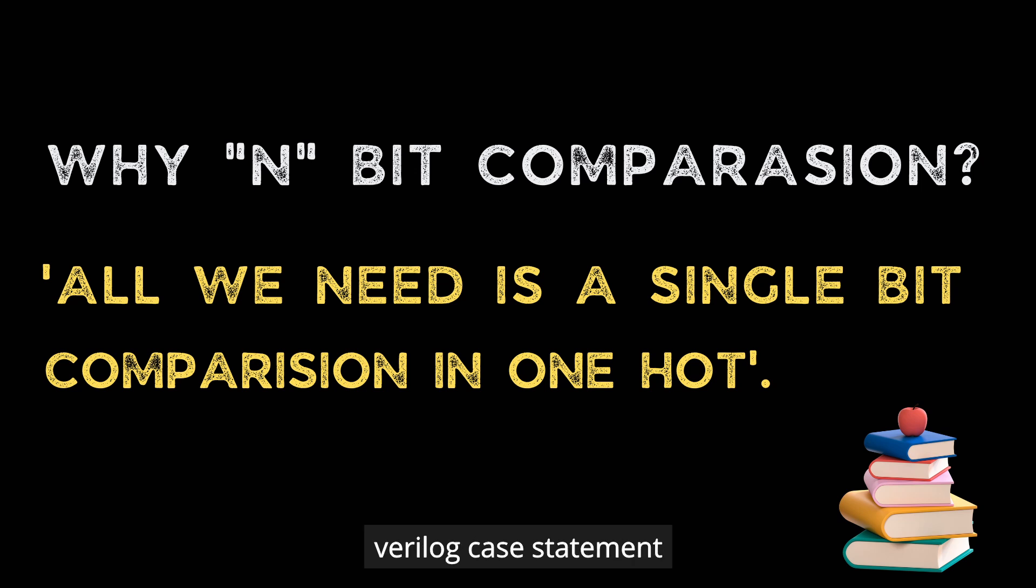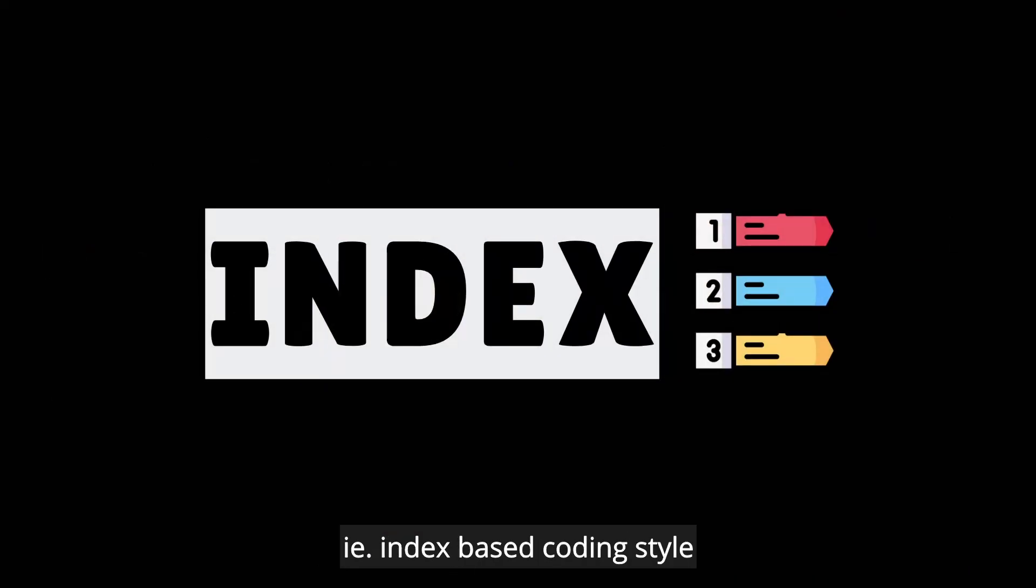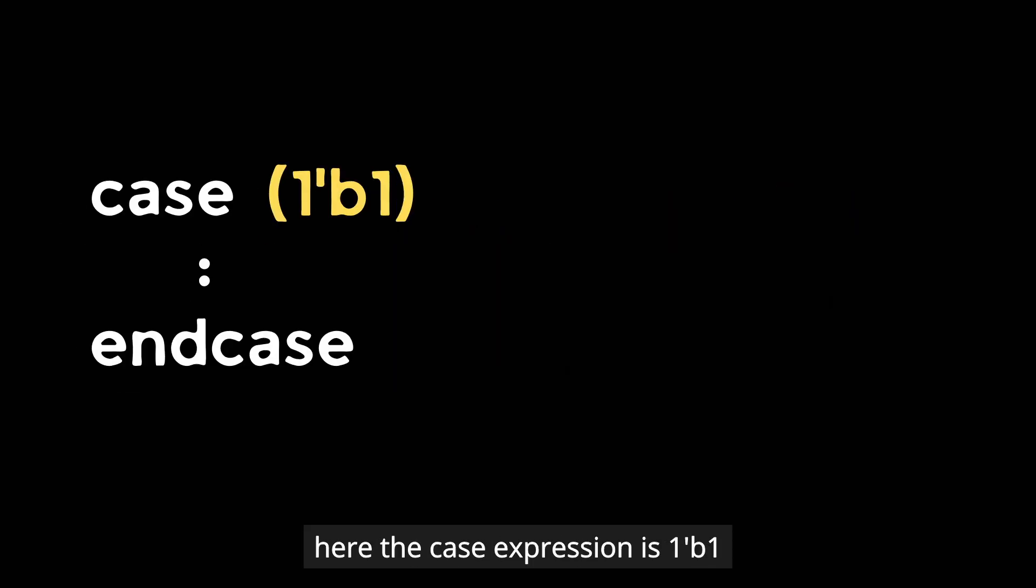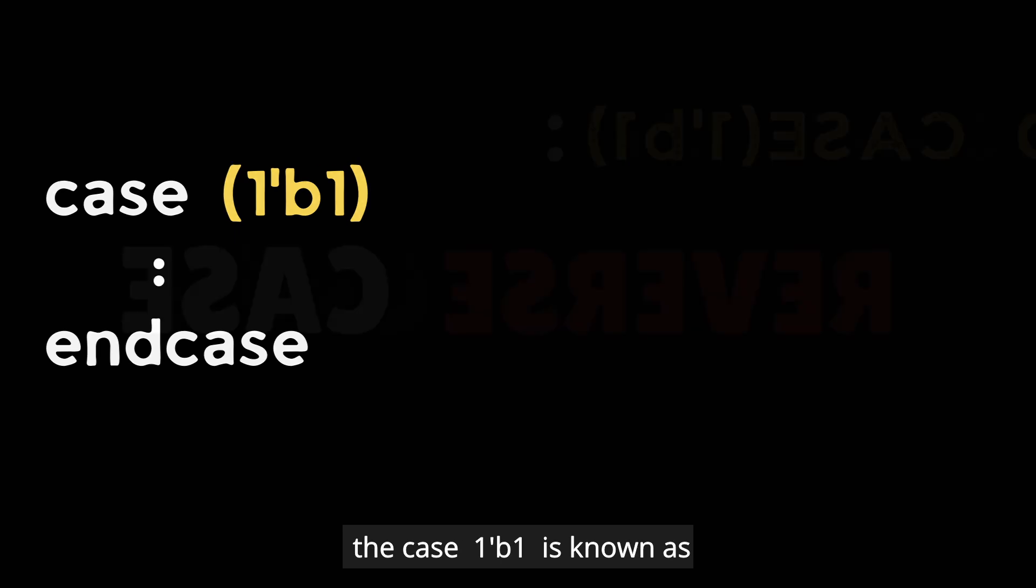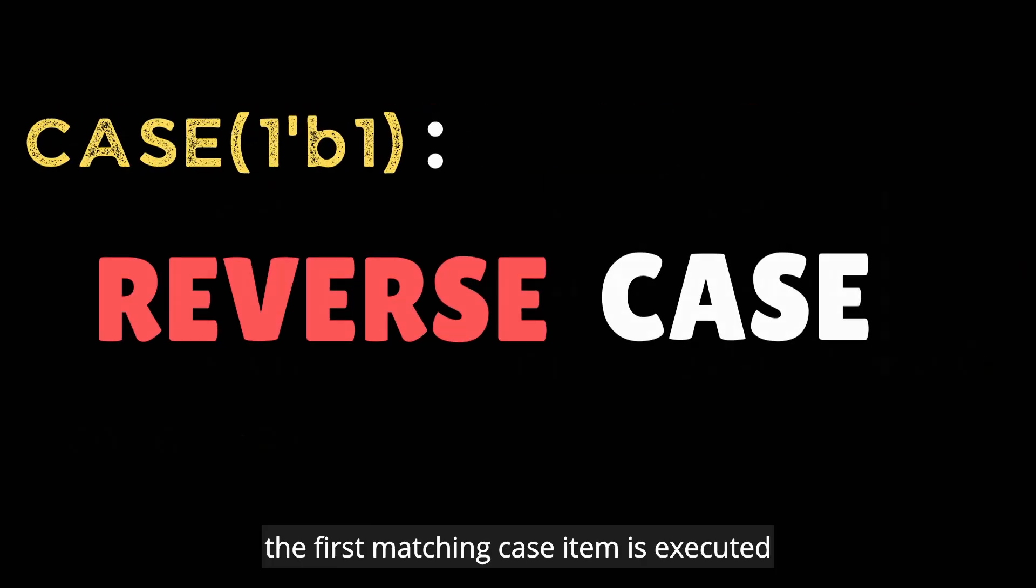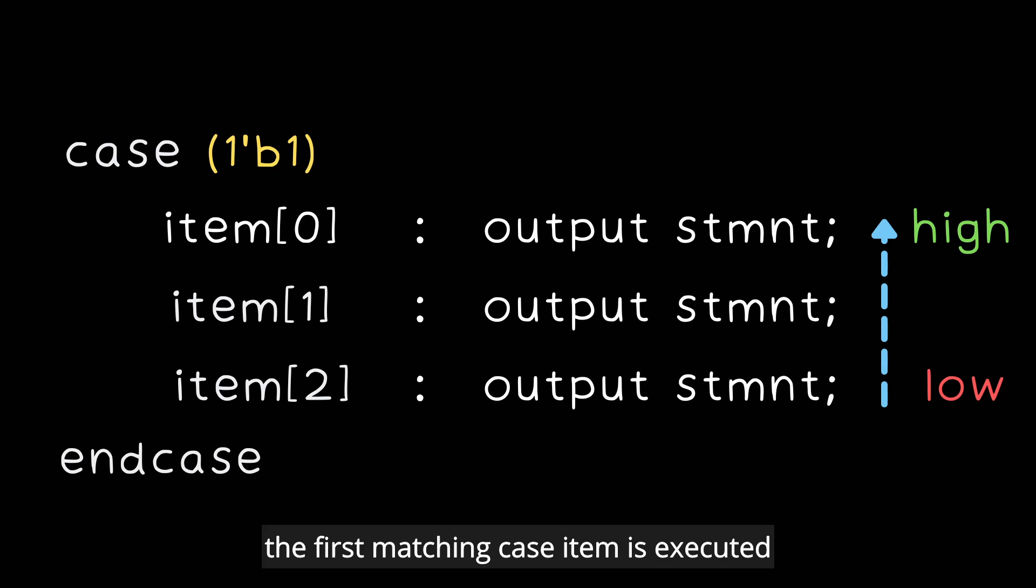This coding style is very unique to Verilog. Here the case expression is 1'b1. The case 1'b1 is known as reverse case statement. Here the first matching case item is executed. So there is an implied priority.